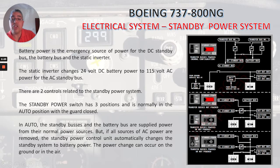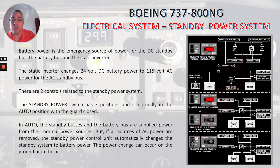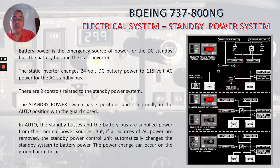Battery power is the emergency source of power for the DC standby bus, battery bus, and the static inverter. The static inverter changes 24 volt DC battery power to 115 volt AC power for the AC standby bus. There are two controls related to the standby power system. The standby power switch has three positions and is normally in the auto position with the guard closed. In auto, the standby buses and the battery bus are supplied power from their normal power sources, but if all sources of AC power are removed, the standby power control unit automatically changes the standby system to battery power.